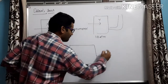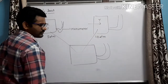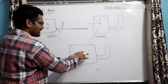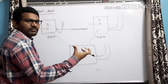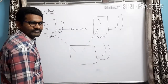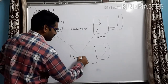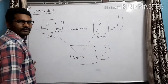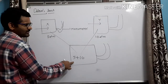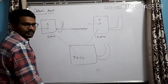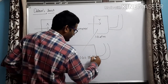Now, in the same container, if I have taken both gases — the same quantity of two gases — can you tell me how much pressure will be exerted by them? It is a simple logic: it will be 5 plus 10. Gas X shows a pressure of 5 ATM, gas Y shows a pressure of 10 ATM, so the total pressure will be 15 ATM. That's it.